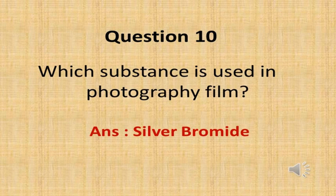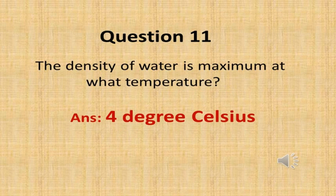The next question is: which substance is used in photography film? The answer is silver bromide. The next question is: the density of water is maximum at what temperature? The answer is 4 degrees Celsius.